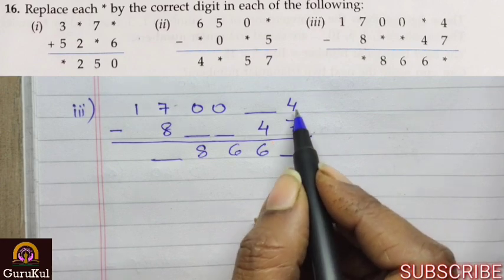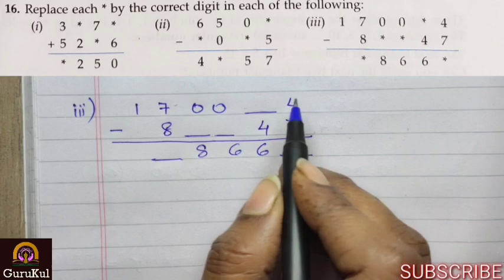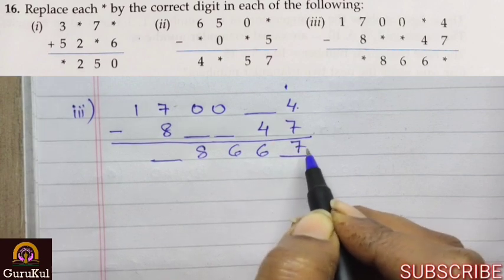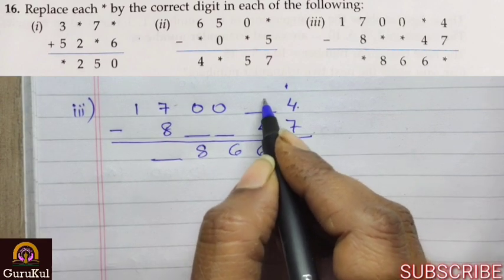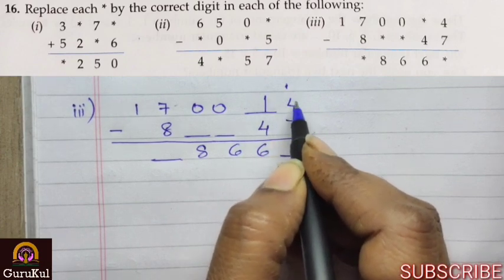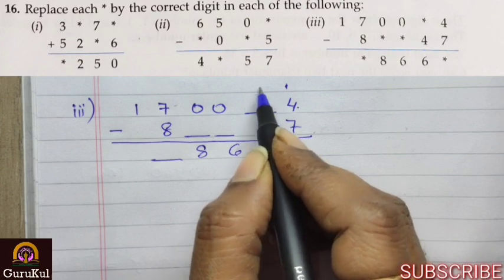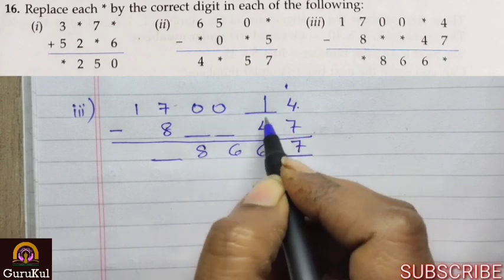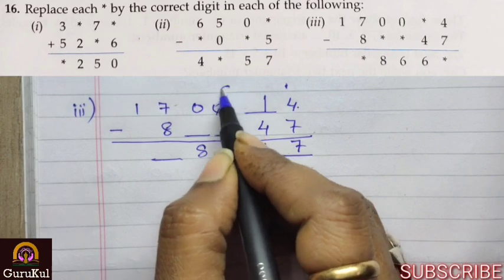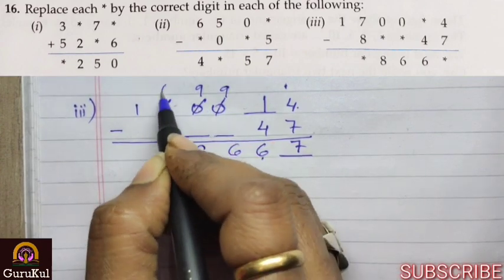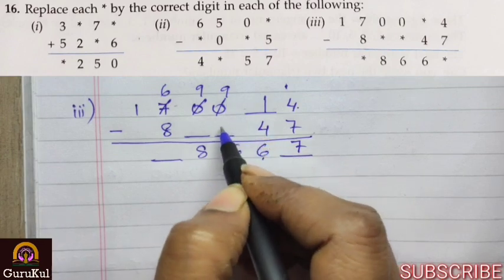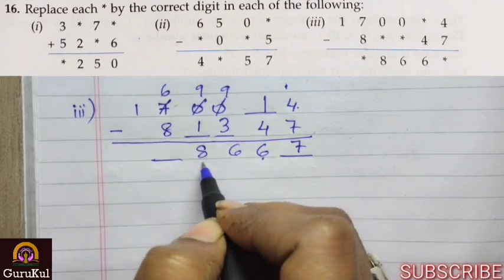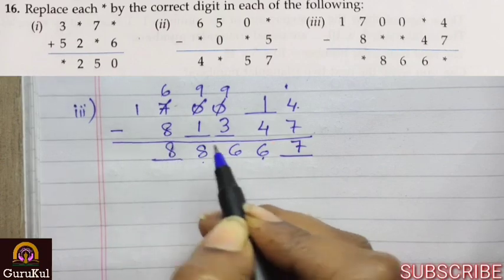Here again subtraction. So 7 has been subtracted from 4. That means it is no doubt 14. It has borrowed 1 from the nearby number. So answer will be 7 here. Here in the blank space it was 1, which gave 1 to 4 in order to make it 14 and itself became 0. So that also borrowed 1 from the nearby number, became 10. 10 minus 4, 6. This was 9, this also was 9, and this becomes 6. So 9 minus 3 gives us 6. 9 minus 1 gives us 8. And here 16 minus 8 gives us 8.